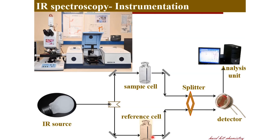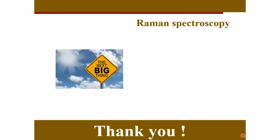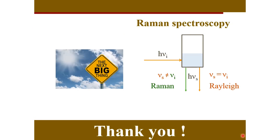That's concisely about the principles behind infrared spectroscopy. Before closing, I would just like to leave a note: all the greenhouse gases are IR active molecules, because only then can they absorb the infrared radiations going out of the earth's surface. So the IR activity of molecules and the greenhouse effect are related. With this, let me close the session — the next big topic to come up is Raman spectroscopy. Thank you.